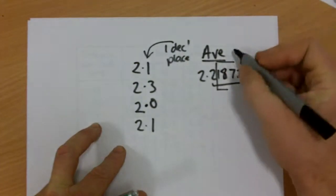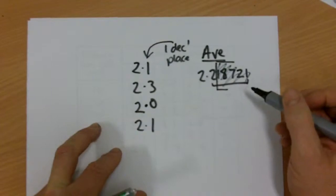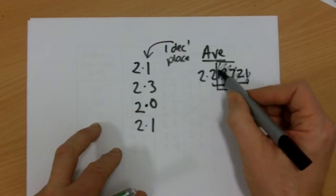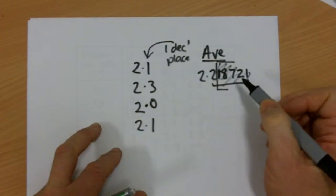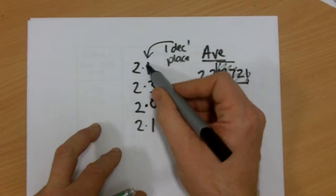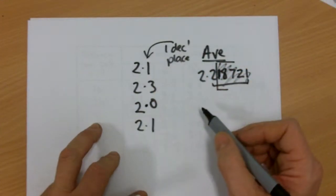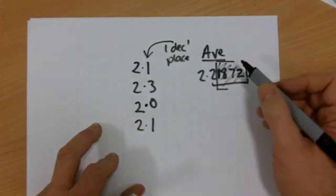So, your average should only have one decimal place. Because how can you suddenly generate an extra level of precision when in your actual results that you measure you've only got one decimal place of precision? So, be aware of that when you're taking your averages.